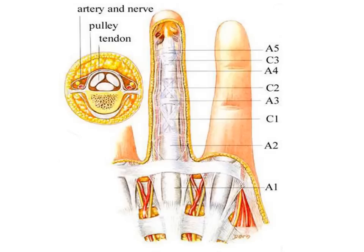Here we see the relative positions of the various pulley systems, showing that the artery and nerve lie on either side of the tendon in the digit. At the level of the digit, the neurovascular bundle is very close to the tendon, and therefore any deep injuries — especially with sharp instruments resulting in flexor tendon injuries — will usually have associated nerve or vessel injury.